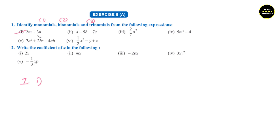First expression: 2m plus 3n. Here 2m is the first term and 3n is the second term. We know that terms can only be separated by a plus or minus sign. Both multiplication and division have no role in deciding how many terms. So 2m plus 3n has two terms. Therefore, it is a binomial.